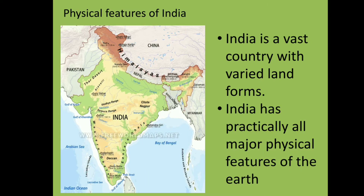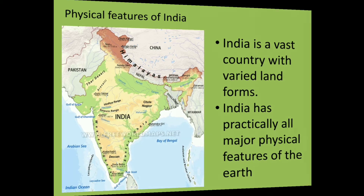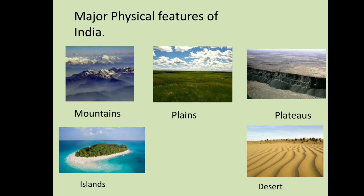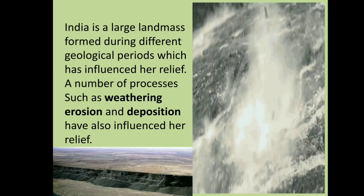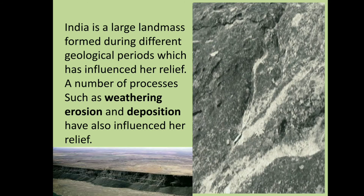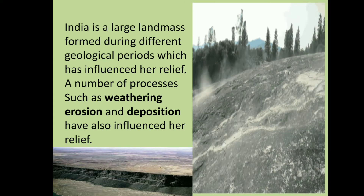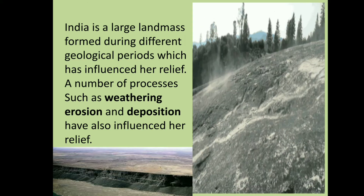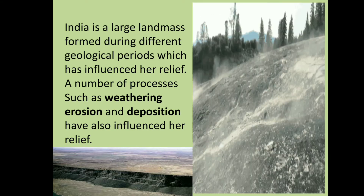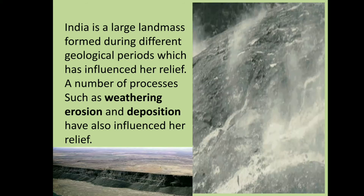India is a vast country with varied landforms and has practically all major physical features of the earth, including mountains, plains, plateaus, islands, and deserts. India is a large landmass formed during different geological periods which has influenced her relief. The processes like weathering, erosion and deposition have created and modified the relief to its present form.